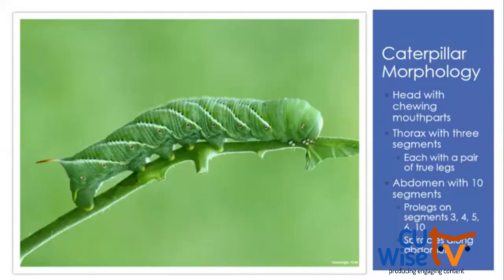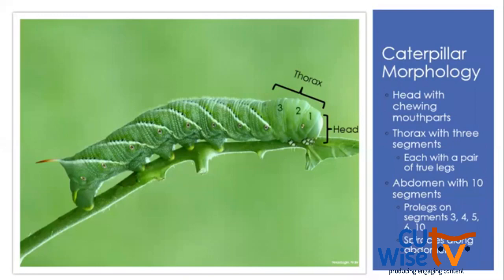Now let's shift to caterpillar identification. A caterpillar has three main body segments: a head, a thorax, and an abdomen. The head has chewing mouth parts. The thorax consists of three body segments, each with a pair of true legs — black and white striped on this caterpillar. The abdomen has 10 segments.